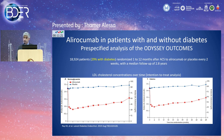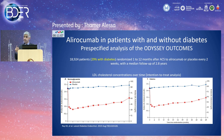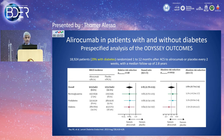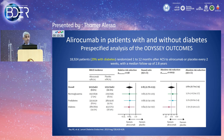Similarly, alirocumab in the ODYSSEY OUTCOMES trial enrolled a large population with about 30% diabetics, all randomized to alirocumab versus placebo on top of maximally tolerated statins. LDL reduction was approximately 50% regardless of whether patients had normal glycemia, prediabetes, or diabetes. Cardiovascular endpoint reductions were also very similar across all three glycemic categories, confirming that PCSK9 inhibitors provide consistent benefit regardless of diabetes status.